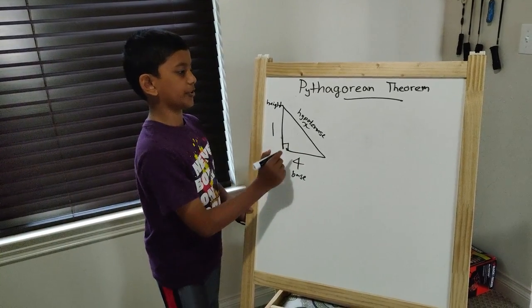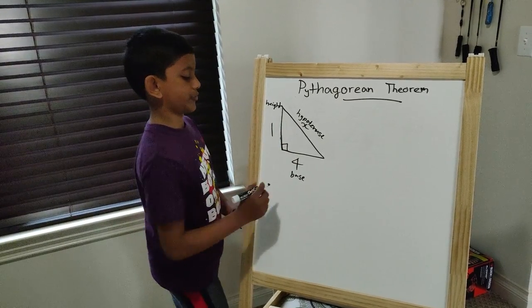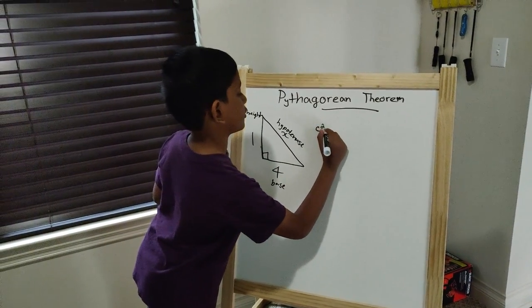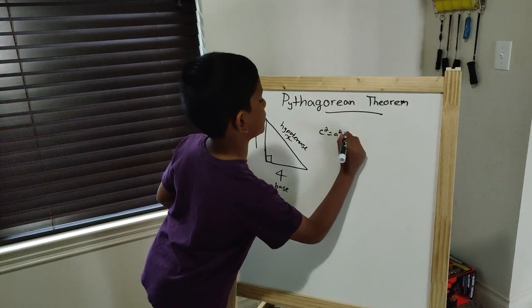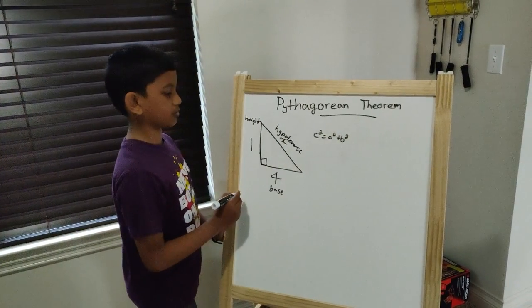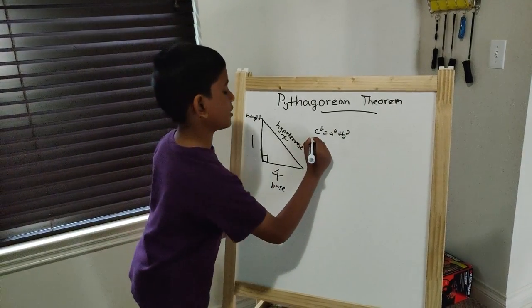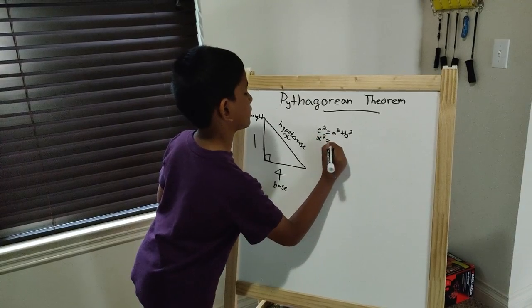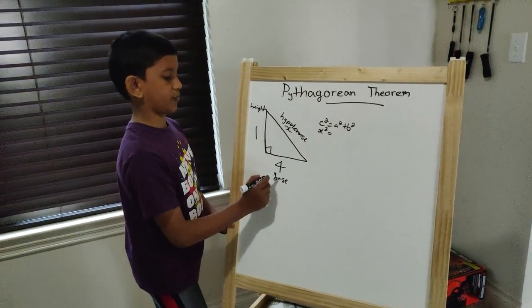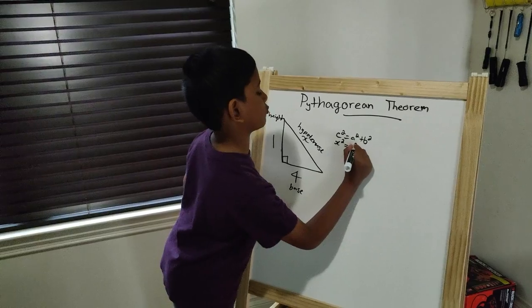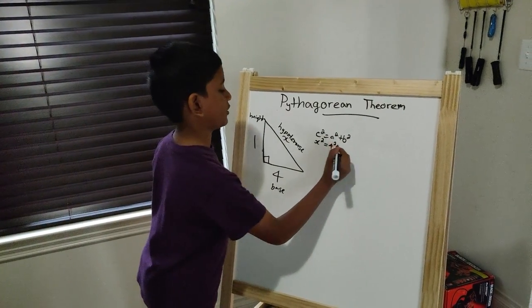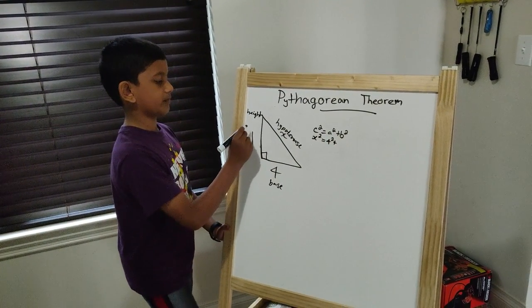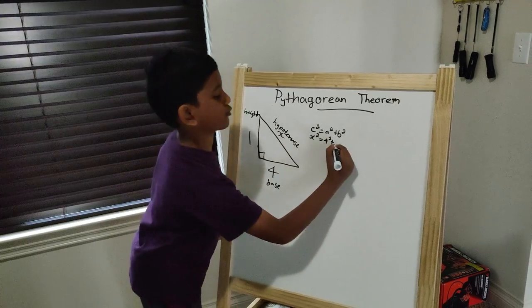The formula for finding x, the hypotenuse, is c² = a² + b². c² is the hypotenuse, so we leave c as x². Now, a is 4, so it will be 4² plus 1². 1 is the height, so leave it as 1².